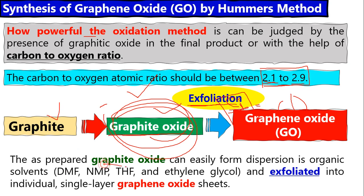The prepared graphite oxide can easily form dispersion in organic solvents. Why? Because now we have oxygen functional groups, so it can easily interact with solvents like water, DMF, NMP, THF, and ethylene glycol. The graphite oxide becomes exfoliated into individual single-layer graphene sheets.